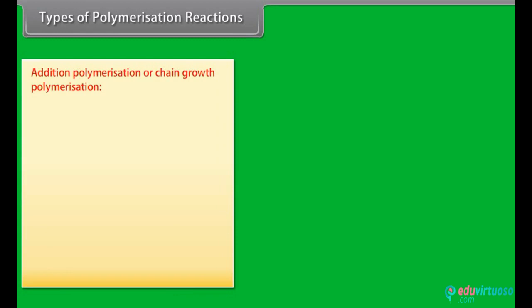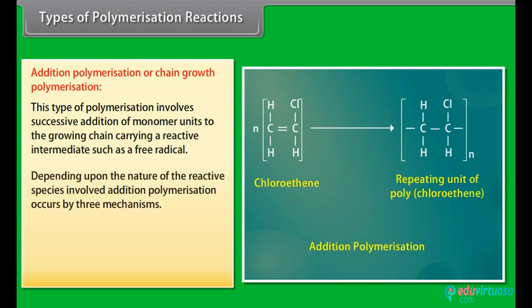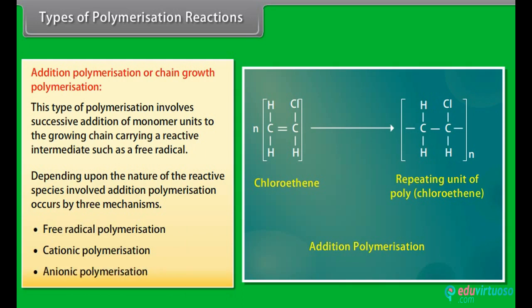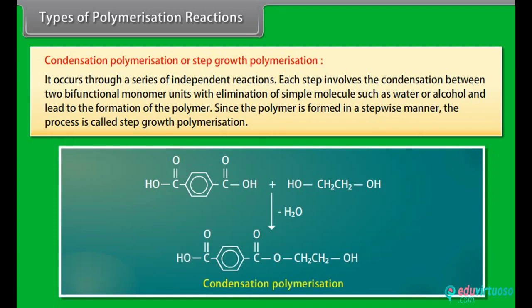Types of polymerization reactions: there are two types. Addition polymerization or chain growth polymerization: this type involves successive addition of monomer units to the growing chain carrying a reactive intermediate such as a free radical. Depending upon the nature of the reactive species involved, addition polymerization occurs by three mechanisms: free radical polymerization, cationic polymerization and anionic polymerization. Condensation polymerization or step growth polymerization: it occurs through a series of independent reactions. Each step involves the condensation between two bifunctional monomer units with elimination of a simple molecule such as water or alcohol, leading to the formation of the polymer. Since the polymer is formed in a stepwise manner, the process is called step growth polymerization.